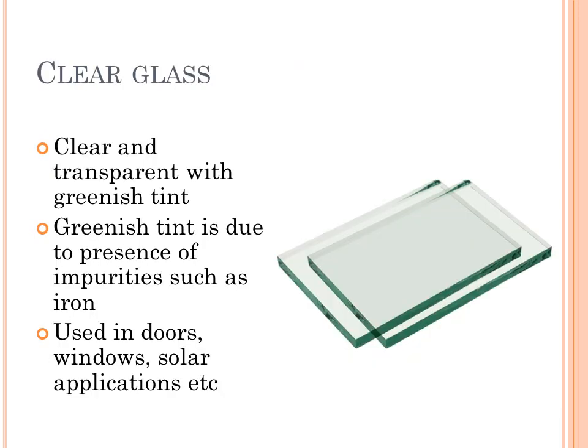Clear glass. As you can see from the figure, they are clear and transparent with a greenish tint. The greenish tint is mainly due to the presence of impurities such as iron. These are used in doors, windows, and for solar applications.